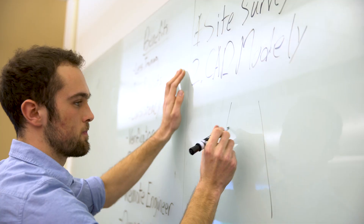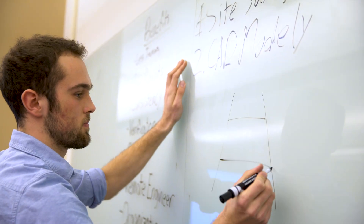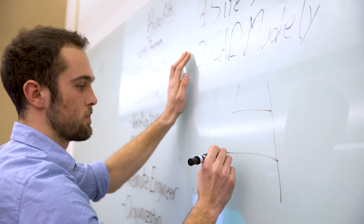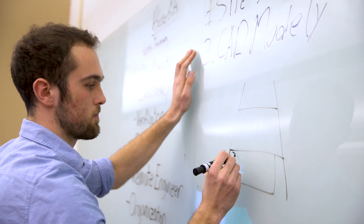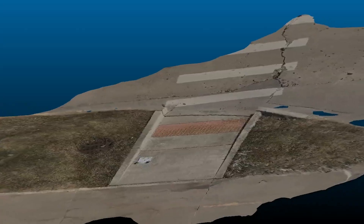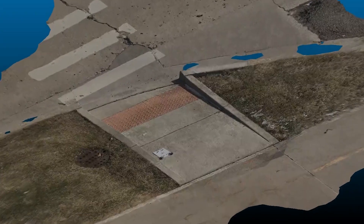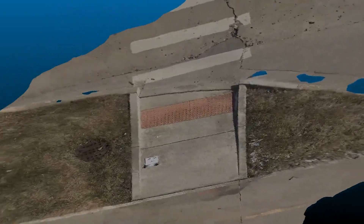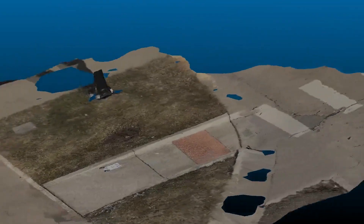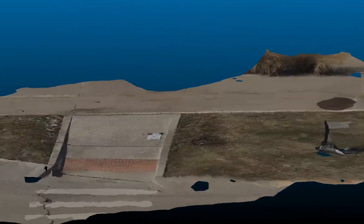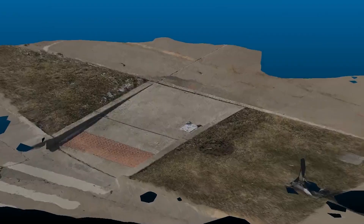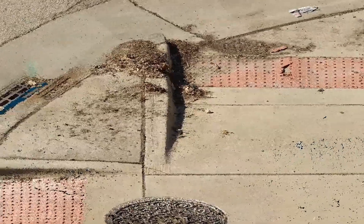Instead of going out to a curb ramp and manually measuring with a tape measure or a level, what you would do with our app is take pictures around the perimeter of the ramp. From that we can create a 3D model, and from that 3D model we can introduce scale and then automatically take those measurements from the office or directly from the cloud with our algorithms.